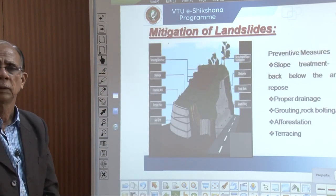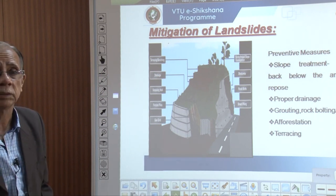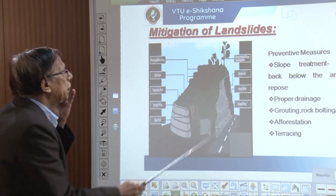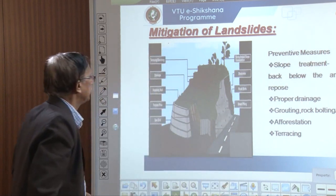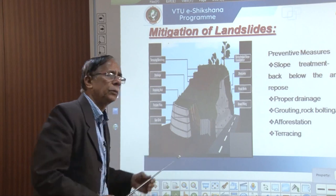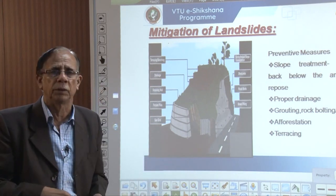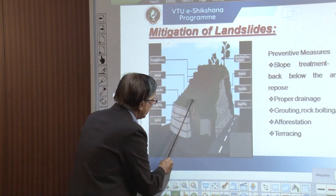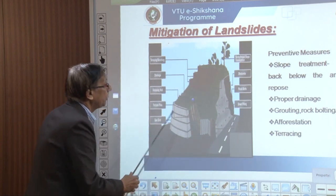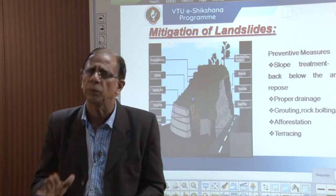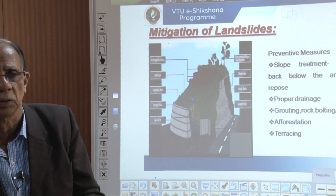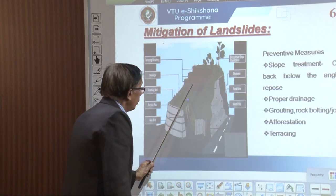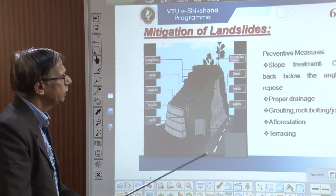So what shall we do? There are several methods to prevent landslides. What are the preventive measures? One is slope treatment. Whenever we have to excavate for many purposes, excavation is inevitable. When we excavate, as far as possible, the slope we develop should be well below the angle of repose. Especially in soil-rich or weathered soil layers, it is possible to cut slopes that remain well below the angle of repose.